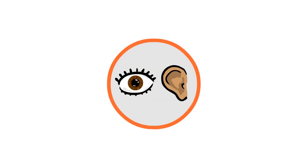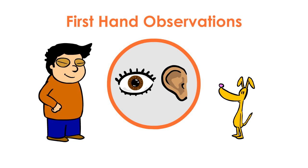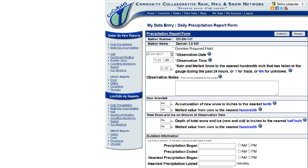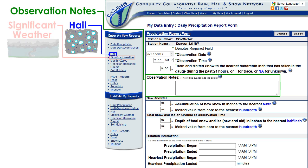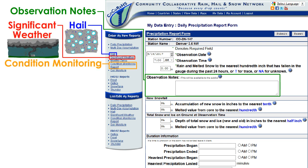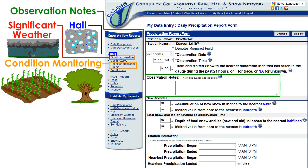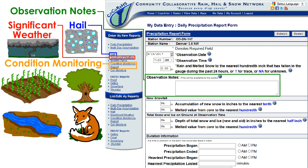The last set of tools on our list are your senses. Your first-hand observations of what you directly see, hear, and experience are very valuable data. This includes what you might report in the Observation Notes box found on your daily and multi-day accumulation report forms. You can also use your senses to provide additional information when submitting a real-time hail or significant weather report. There are also condition monitoring reports, where you can report the condition of plants, trees, waterways, and wildlife, or other important information such as drought.